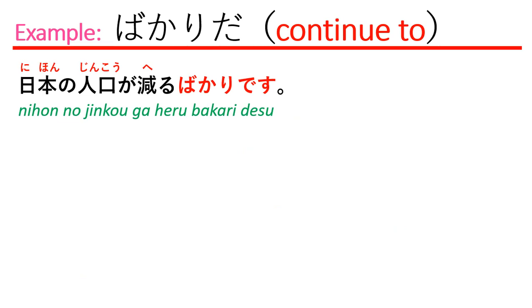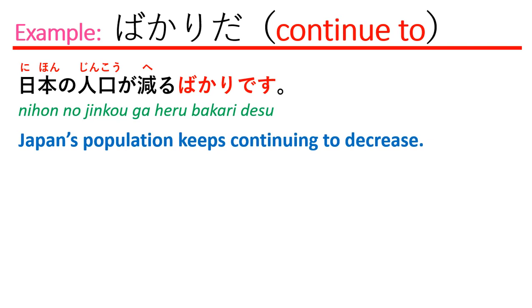The next example: 日本の人口は減るばかりです。 Which means: Japan's population keeps continuing to decrease.